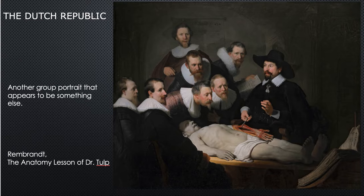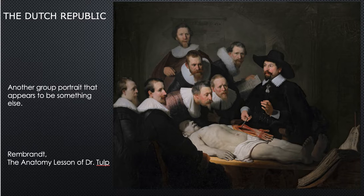Here's another Rembrandt group portrait, and this one is a little bit gorier. This is the Anatomy Lesson of Dr. Tulp. Can you figure out who the doctor is? He's the one in the hat, the one with the forceps grabbing some tendons in this poor cadaver's arm. These are all medical students, and each one of these medical students would have paid a fee to have his portrait included here with Dr. Tulp.